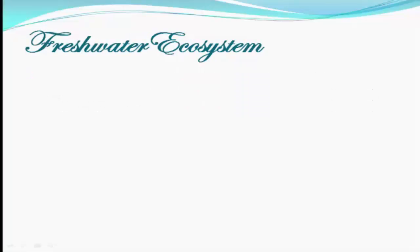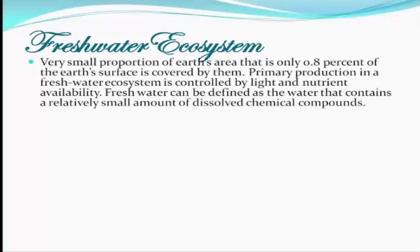Next, we have the Freshwater Ecosystem. It is a very small portion of the Earth's area — only about 0.8% of the Earth's surface is covered by freshwater. Primary production in a freshwater ecosystem is controlled by light and nutrient availability.